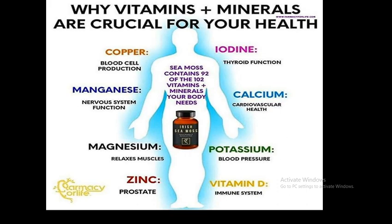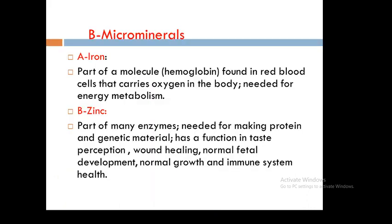These are the different types of macro minerals. Now let's go to micro minerals. The body needs trace minerals in very small amounts. Iron is part of a molecule of hemoglobin, found in the red blood cells, which carry oxygen in the body. It is also needed for energy metabolism.